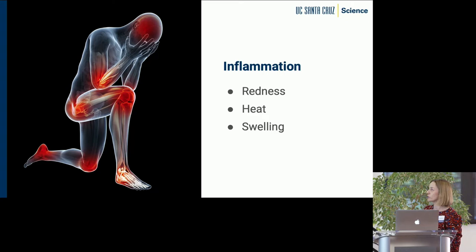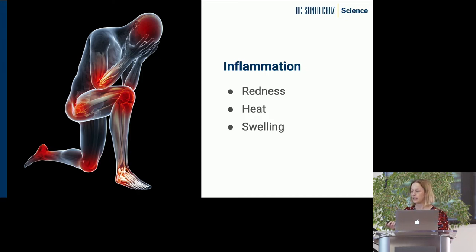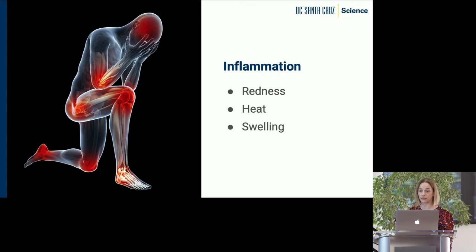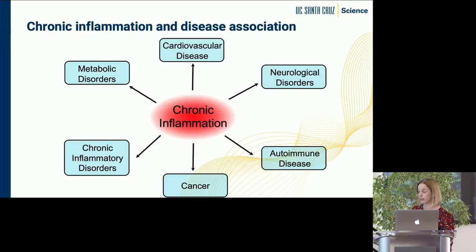The area that my lab very much focuses on is the processes that lead to inflammation. I'm sure everybody in this audience is somewhat familiar with the inflammatory processes when you think of redness, heat, and swelling. It's important to also know that we need inflammation to protect us against infection, whether it's a virus or bacteria. We need the inflammatory process to kick in, but you need it to work really quickly and then shut off really quickly. Problems really arise when we don't shut off the process very quickly, and that can lead to what we know as chronic inflammation.